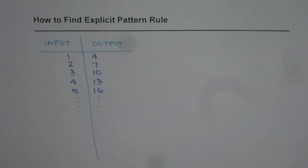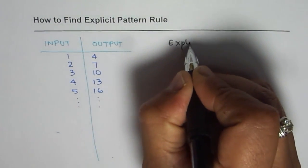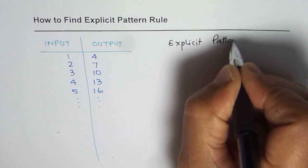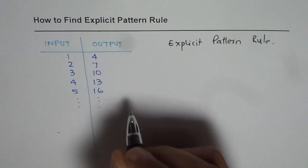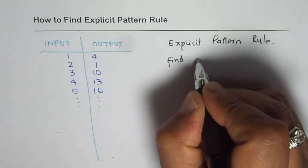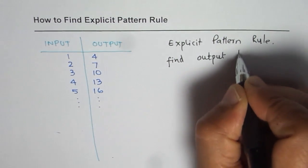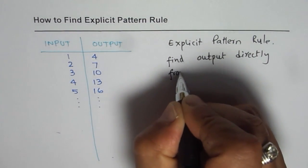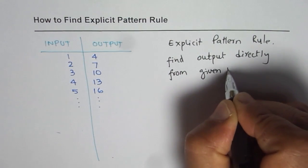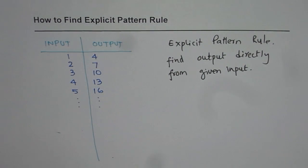Now what we need to find is a pattern rule so that for any given input we can find the output. For that we use explicit pattern rule. Now explicit pattern rule tells you directly the output for any given input. So using explicit pattern rule you can directly find output from given input.